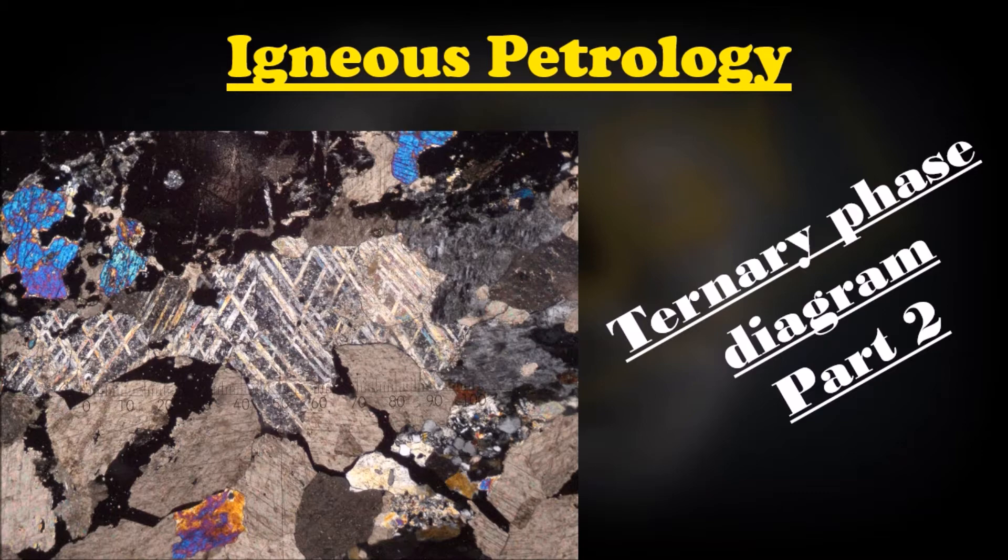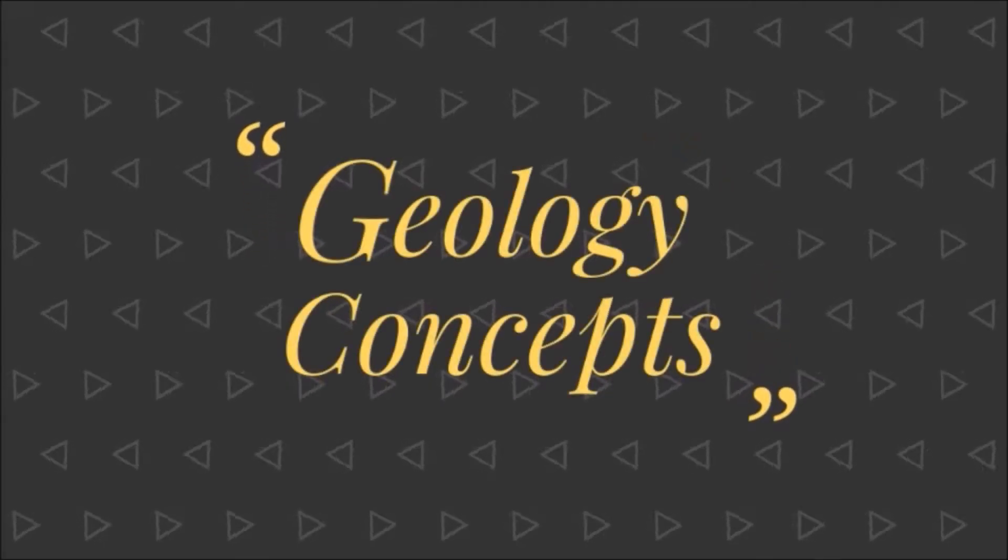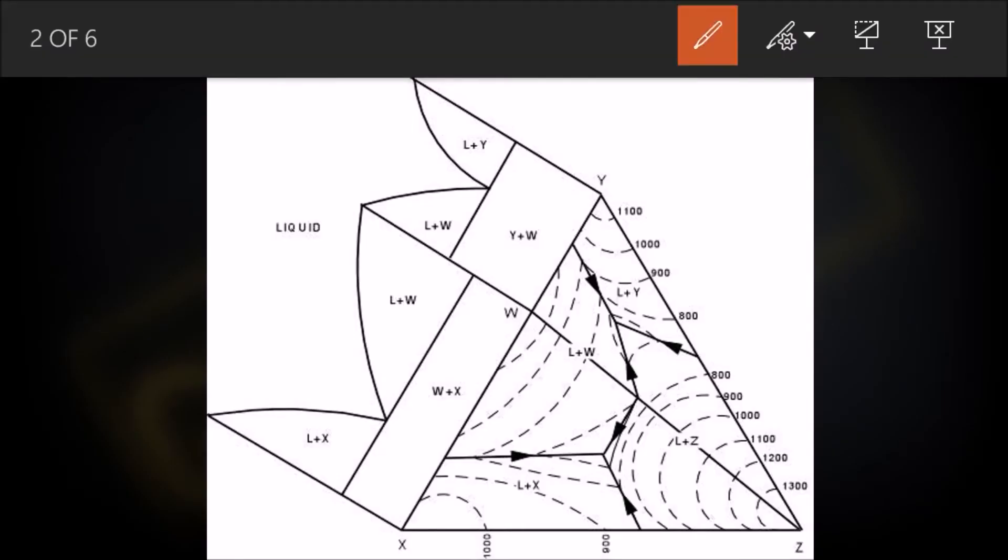Hello guys, welcome to geologic concepts. In this part we will deal with the ternary diagram in which one component is melting congruently. Here W is an intermediate between X and Y. This looks like a very complex diagram, but if you see it as a two triangle diagram of WYZ and WXZ, this will become fairly easy to understand.